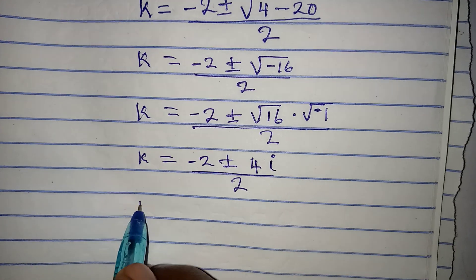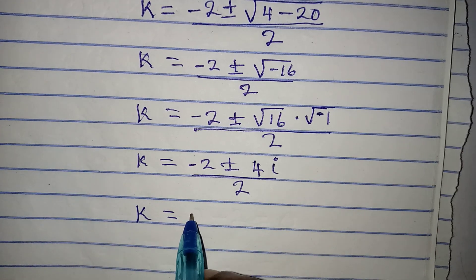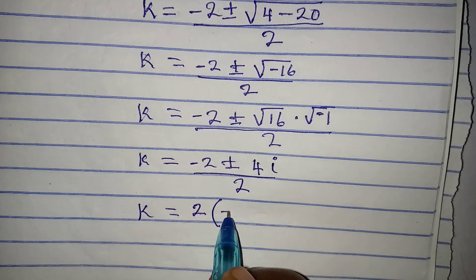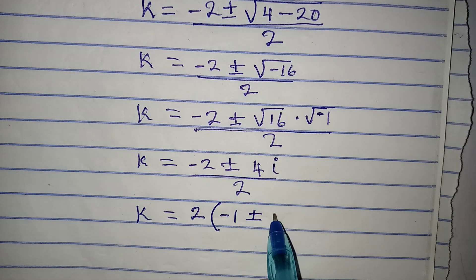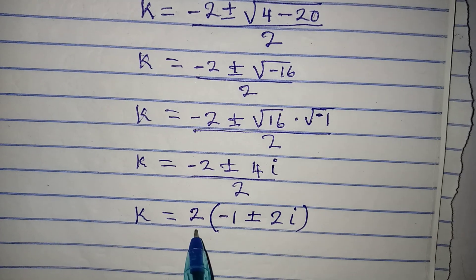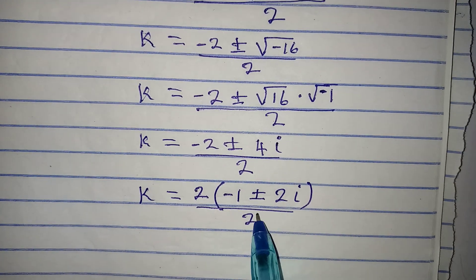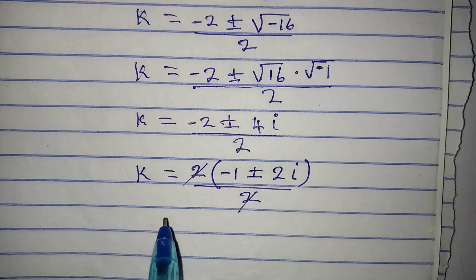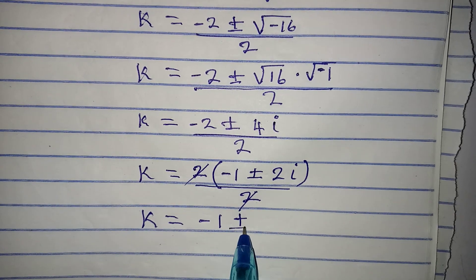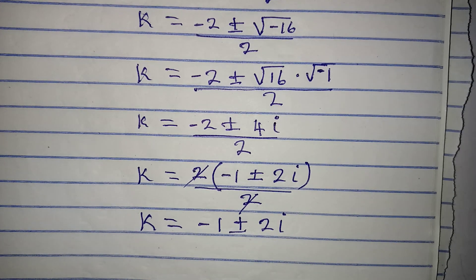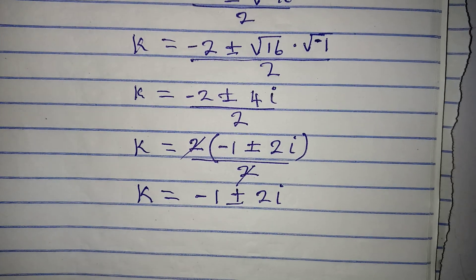We factor out 2 from the numerator: 2 times (minus 1 plus or minus 2i), divided by 2. The 2s cancel, giving k equals minus 1 plus or minus 2i. This is a two-in-one solution.